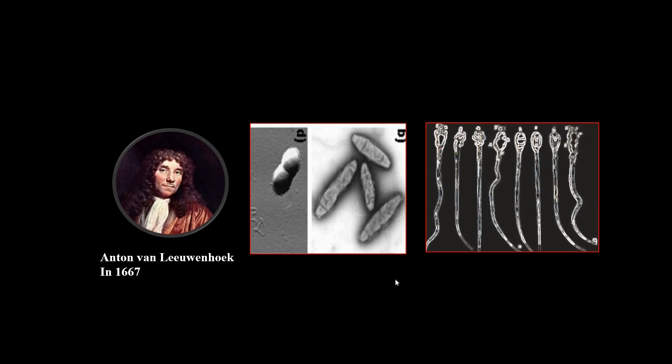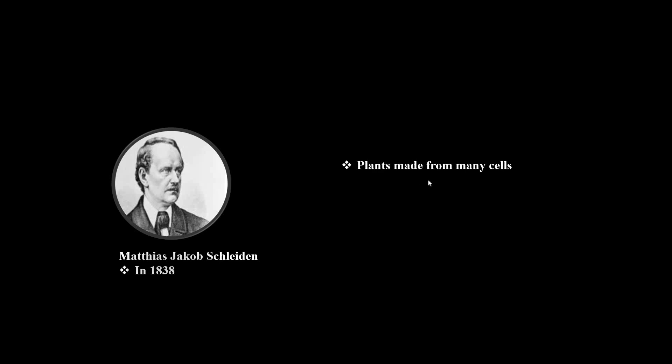For many years, no one was actively working to study cells. But in 1838, a German person who examined tissues of plants and became a botanist — his name was Schleiden. He found that plants are made of cells and that the embryo of plants arises from a single cell.